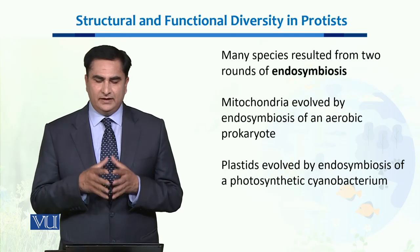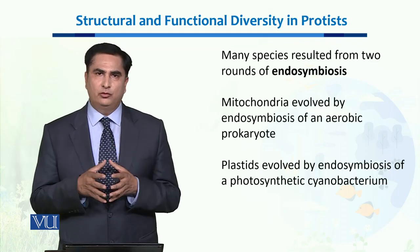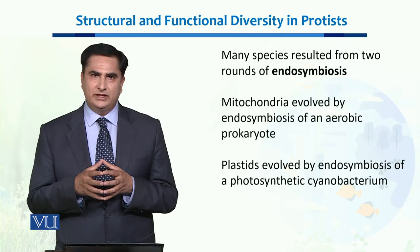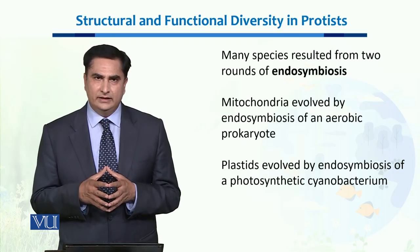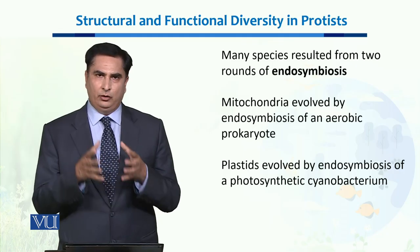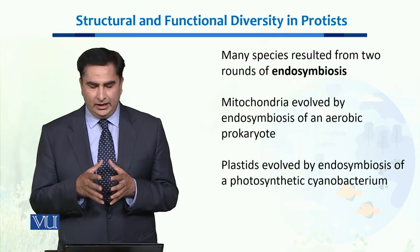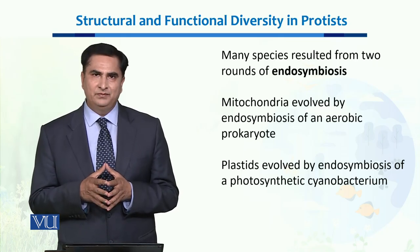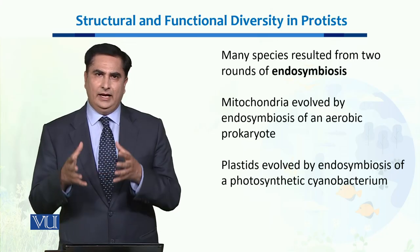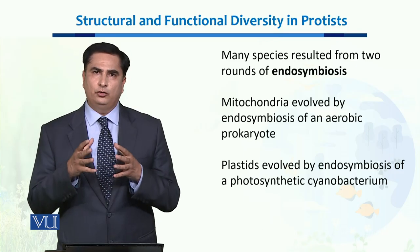Many species of protists, especially the photo-autotrophs, resulted from two rounds of endosymbiosis. In the first round, protists absorbed mitochondria, which became an integral part of them and helped in energy synthesis. Then plastids also evolved through the endosymbiosis of a photosynthetic cyanobacterium, which entered the protist, became a permanent part of it, and enabled photosynthesis in those photo-autotrophic protists.